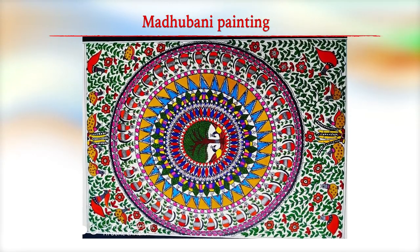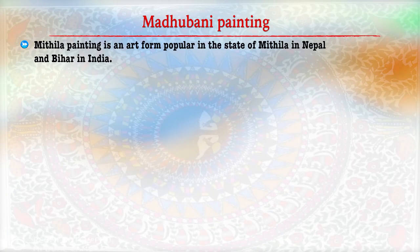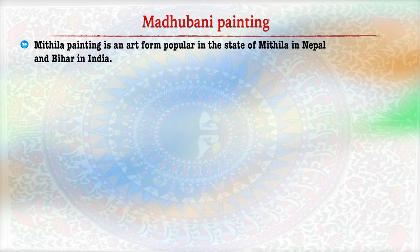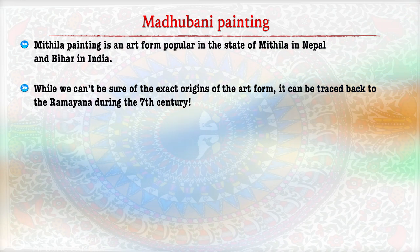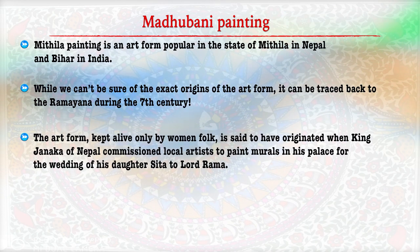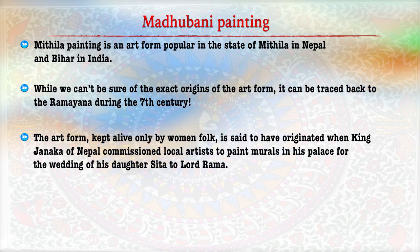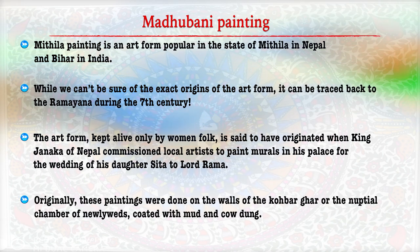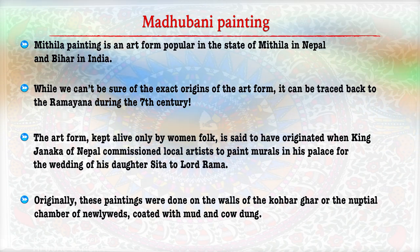The first such painting is Madhubani painting, also known as Mithila painting — an art form popular in the Mithila region of Bihar. The exact origin is difficult to trace, but it is still kept alive by women folk and is said to have originated when King Janaka commissioned local artisans to paint murals in his palace for the wedding of his daughter Sita to Lord Rama. Originally, these paintings were done on the walls of the Goburghar or on the chamber of a newlywed person, coated with mud and cow dung.